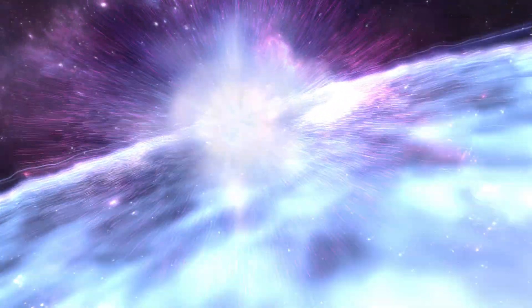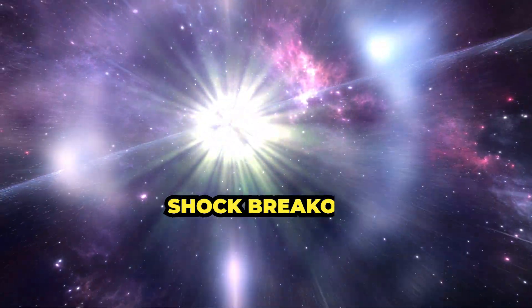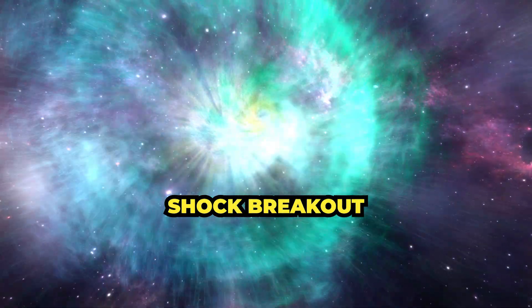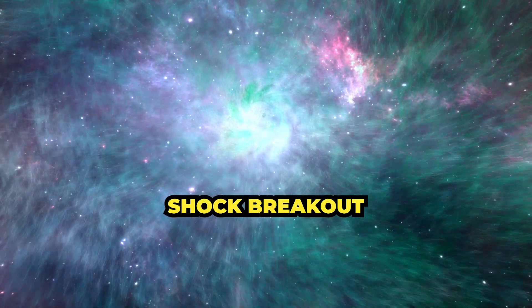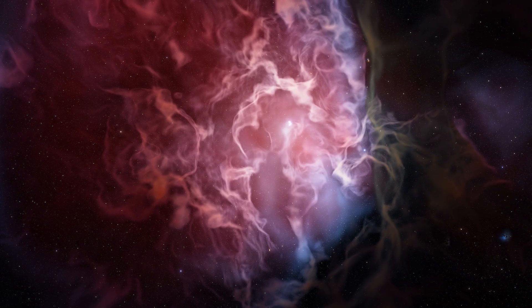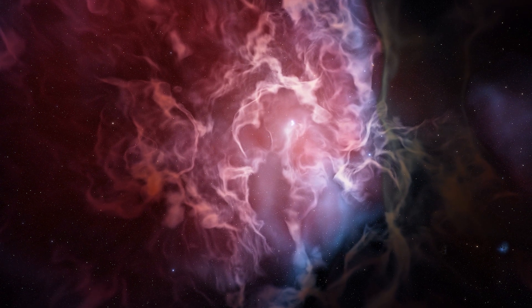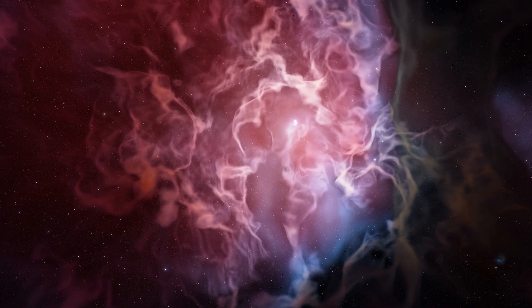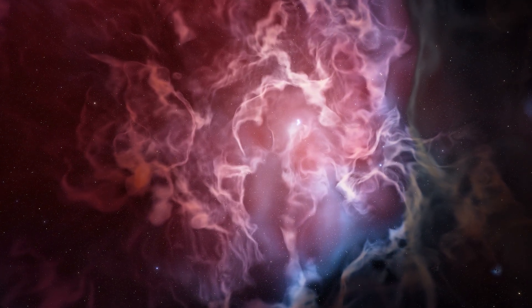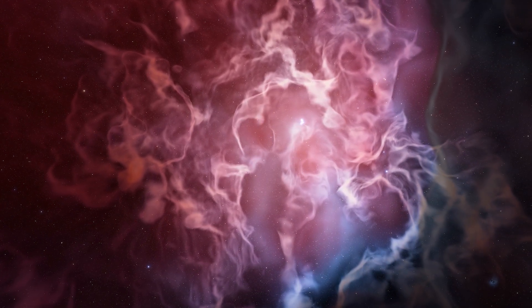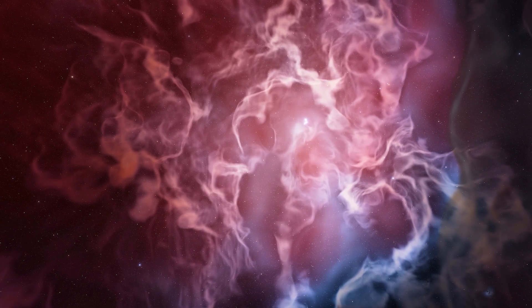The initial flash of light from a supernova is known as the shock breakout, and it is typically very brief, lasting only a few hours or days. This is followed by a longer phase of brightening as the expanding shell of gas from the explosion collides with surrounding material and heats it to high temperatures, releasing more light in the process.